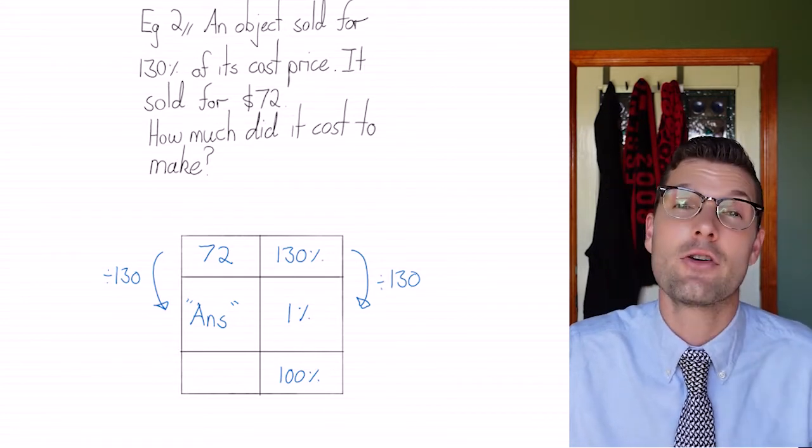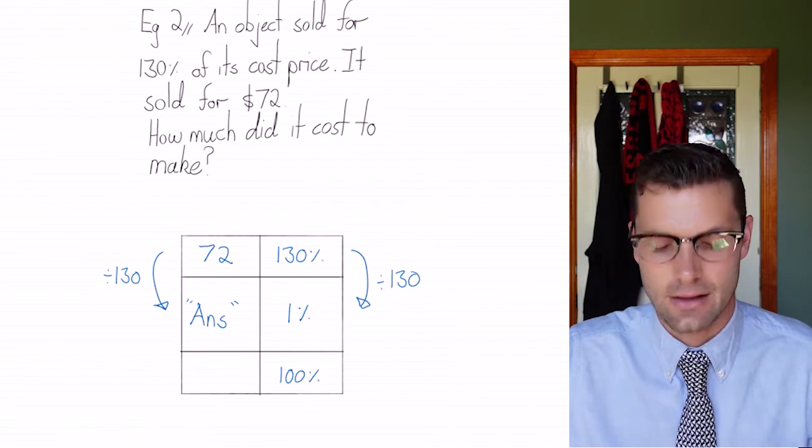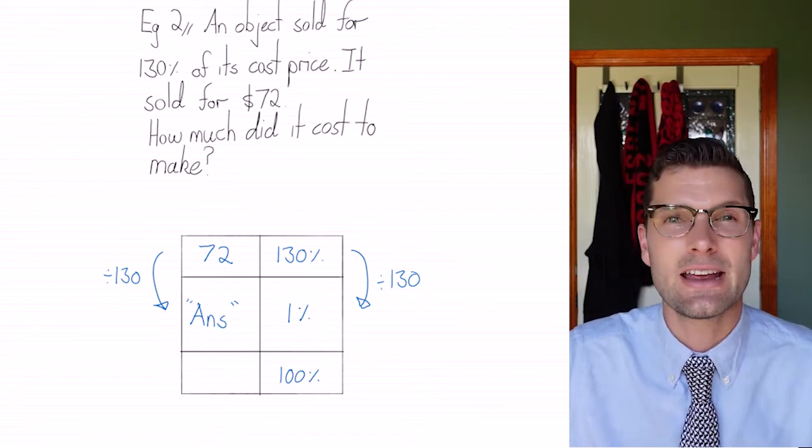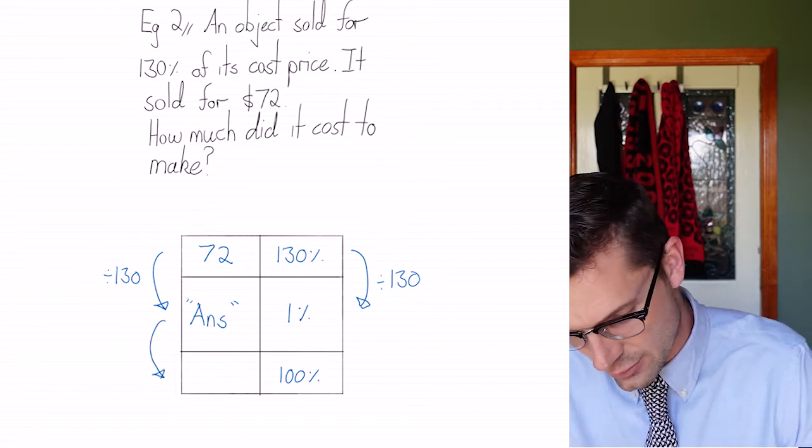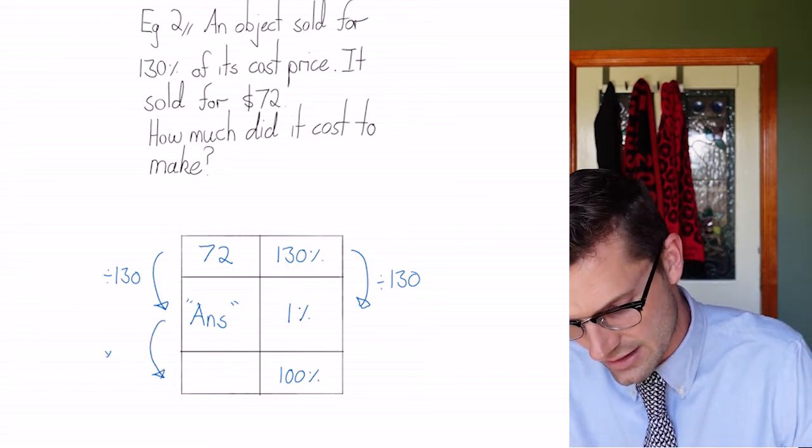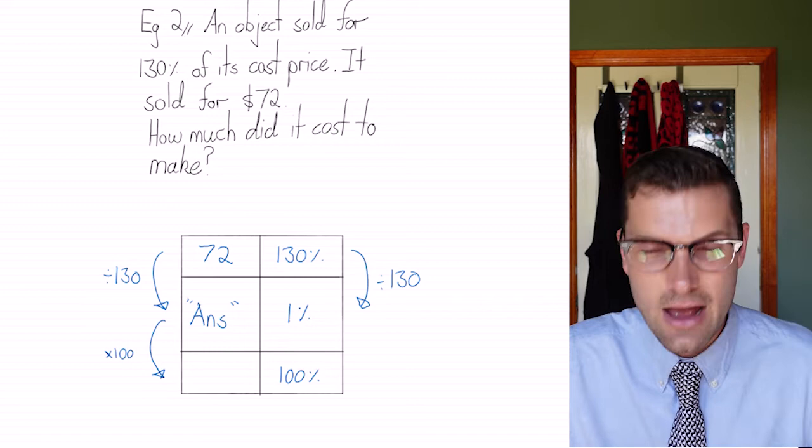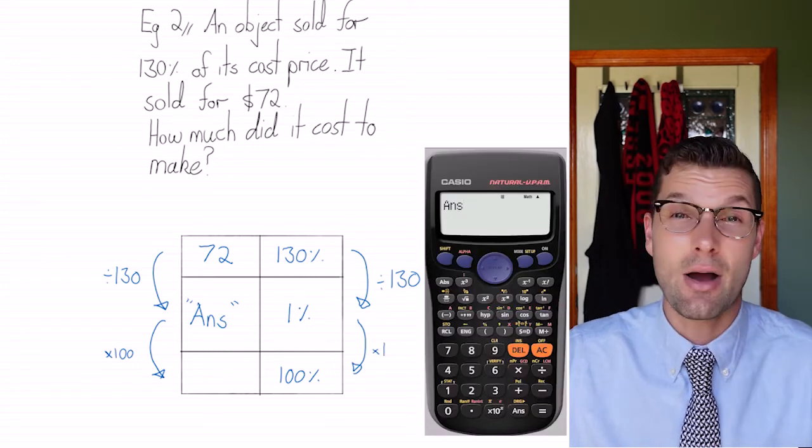But because I know that I've got 1% here in my calculator, I can find 100% really easily by multiplying this by 100, because that's what I've got to do to get from 1% to 100%.